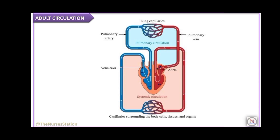On contraction, the right ventricle pushes deoxygenated blood through the pulmonary arteries into the lung capillaries, where the blood gains oxygen and gives off carbon dioxide. The oxygenated blood then returns through the pulmonary veins into the left atrium, flows into the left ventricle, and is pushed through the aorta to circulate to the whole body. The deoxygenated blood then returns to the right atrium and this cycle keeps going.